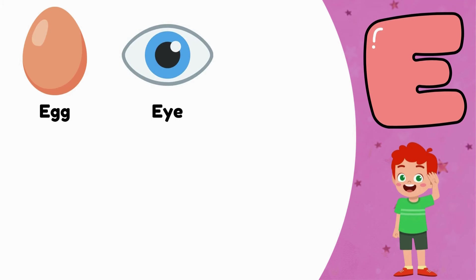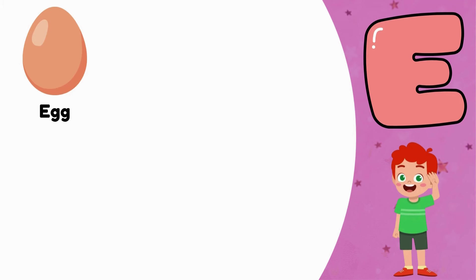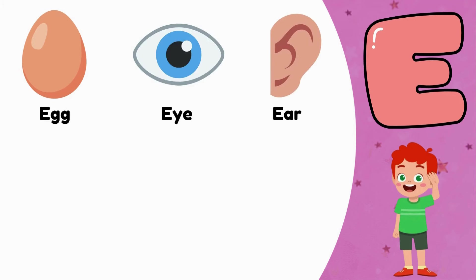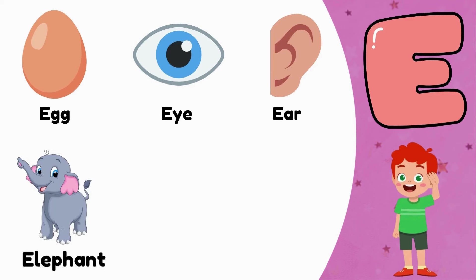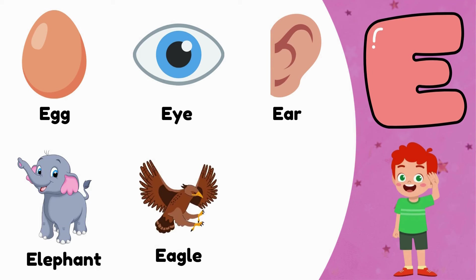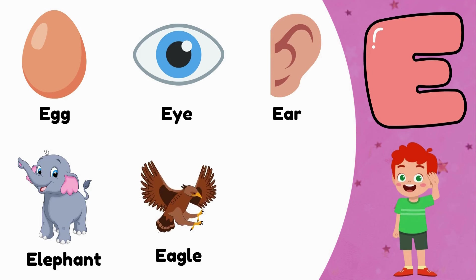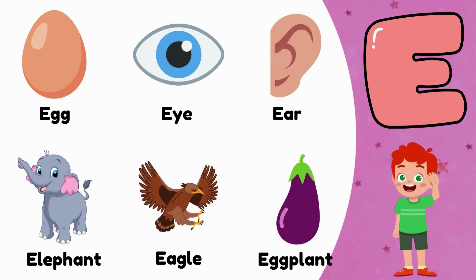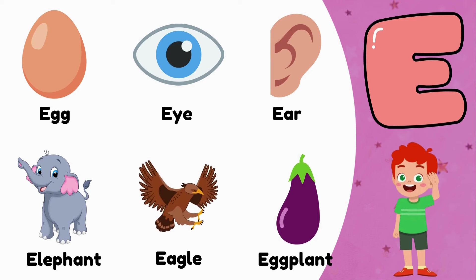E. E is for Egg. E is for Eye. E is for Ear. E is for Elephant. E is for Eagle. E is for Eggplant.